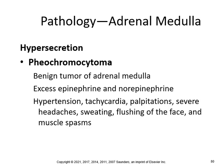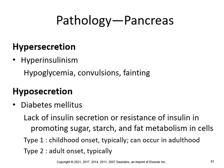Hypersecretion of the adrenal medulla is pheochromocytoma — a benign tumor of the adrenal medulla with excess epinephrine and norepinephrine, causing hypertension, tachycardia, palpitations, severe headaches, sweating, flushing of the face, and muscle spasms. Hypersecretion of the pancreas — hyperinsulinism — causes hypoglycemia, convulsions, and fainting. Hyposecretion would be diabetes, either type 1 or type 2, involving lack of insulin secretion or resistance of insulin in promoting sugar, starch, and fat metabolism.